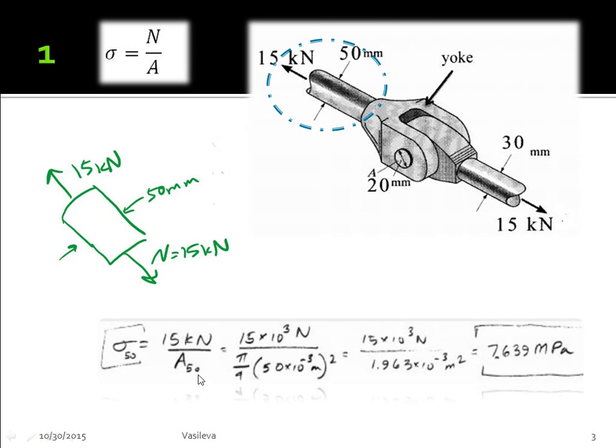We know that average normal stress is force over area, so we have 15 kilonewtons divided by the area, and we're given a diameter of 50 millimeters. So I hope everybody knows how to do pi r squared. And we end up with 7.639 megapascals.